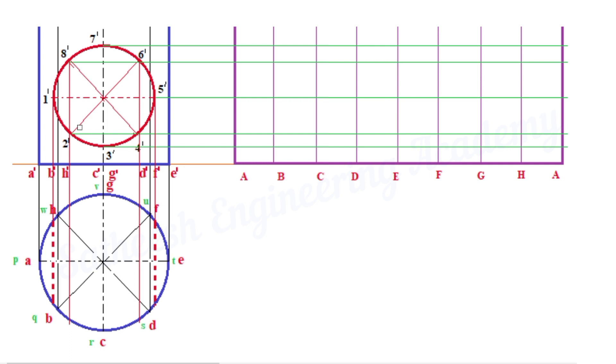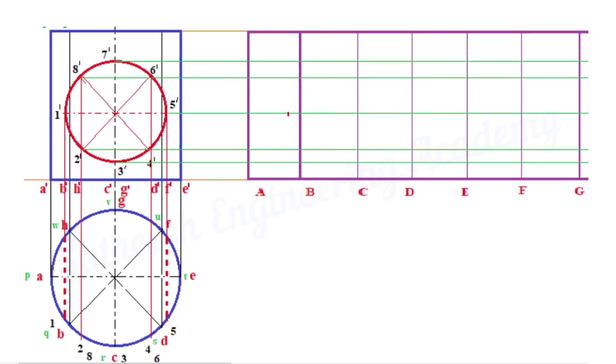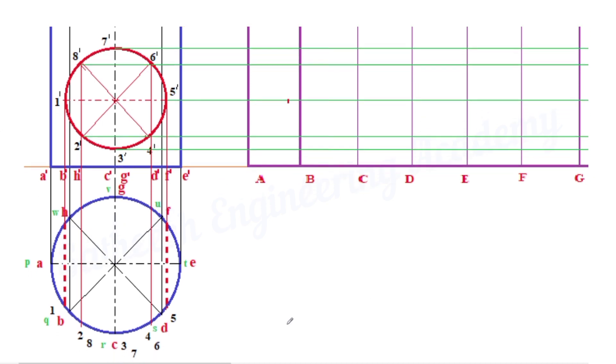Therefore, the 1 dash in front view is mentioned in top view as 1, similarly 2, 8, 3, 7, 4, 6, and 5. In the rear side, assign the same numbering order or some other different order. Now that number 1 in top view lies between A to B.